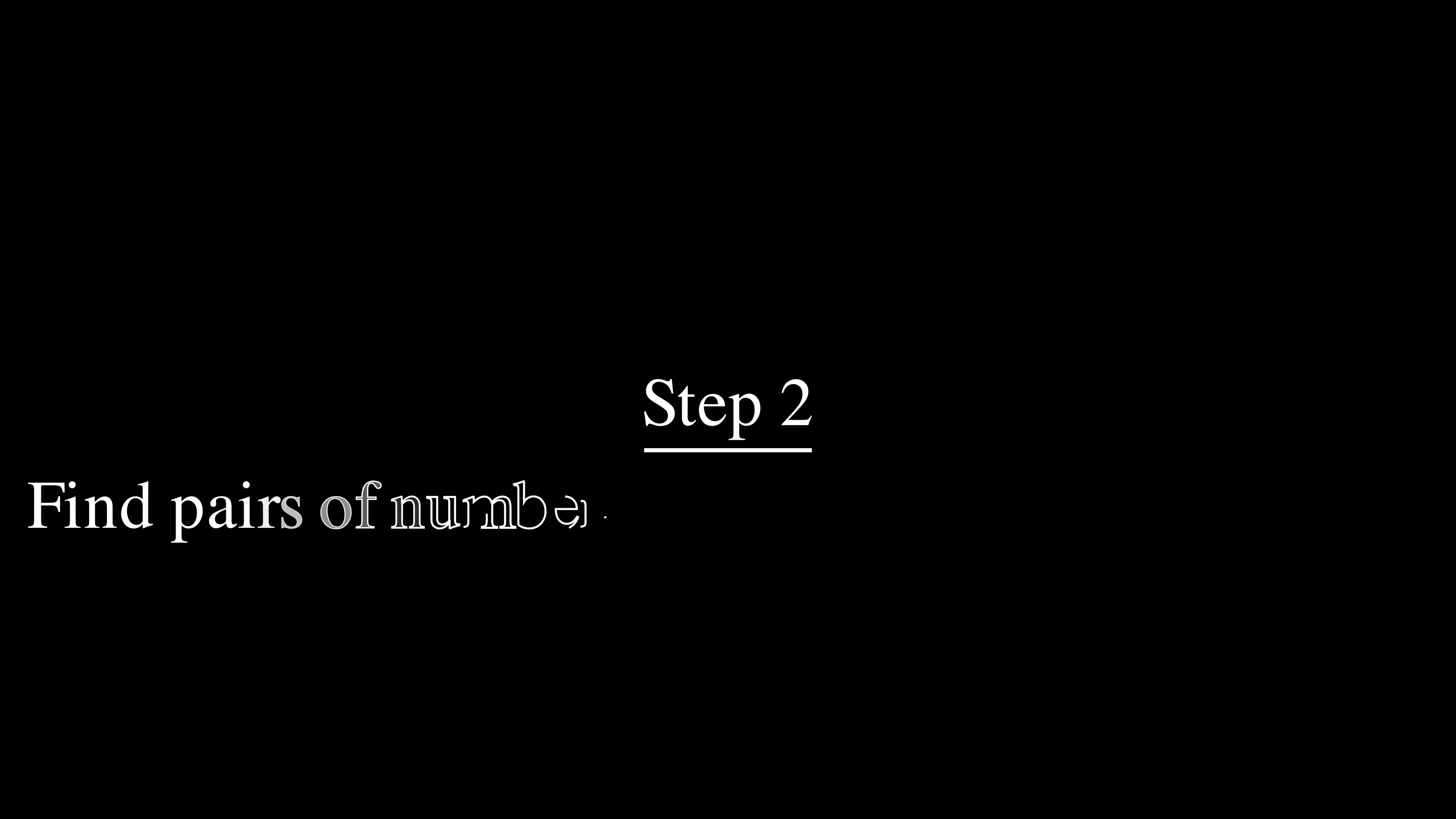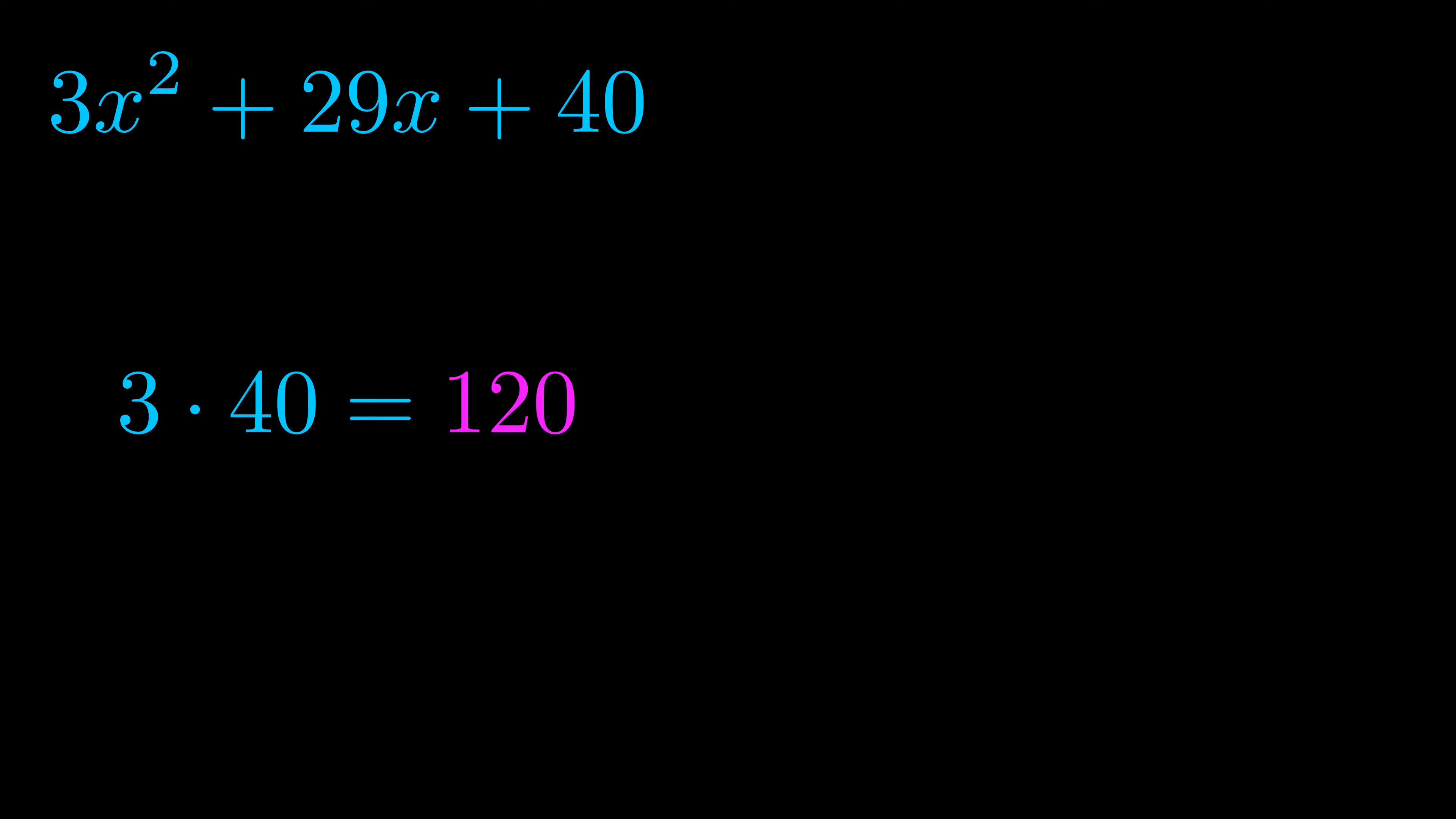Step two is to try to find all of the pairs which multiply to this number. Now it turns out you don't really need to find all of them but go ahead and write down as many numbers as you can that multiply to the magenta value for now. Pause the video and resume when you're ready to continue.